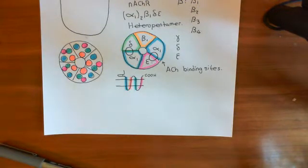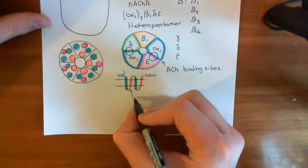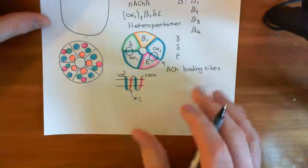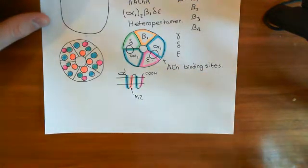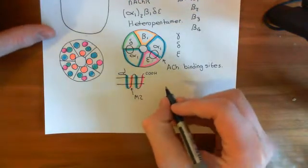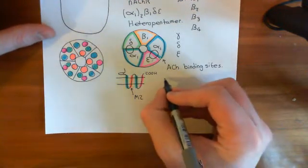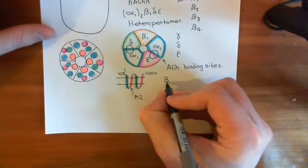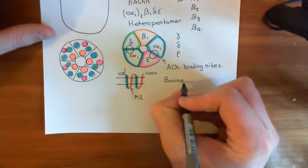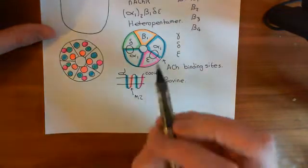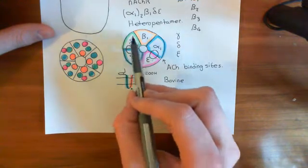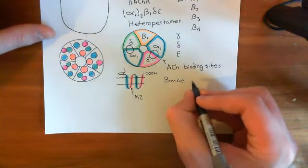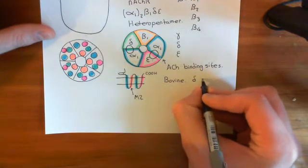How do we know M2 lines the pore? What experiment shows that this M2 region lines the pore? Basically, what you do is make chimeras. You go to cows and take the bovine nicotinic acetylcholine receptor, specifically looking at the delta subunit.